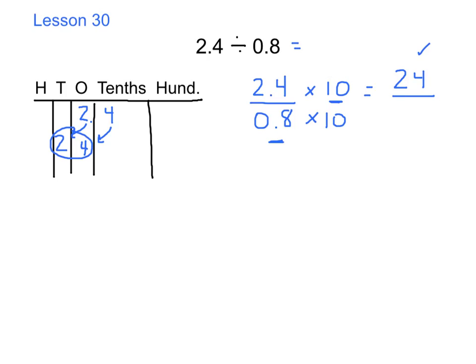Now let's look at the second part: 8 tenths times 10. I know that 8 tenths times 10 is 8. But just to be sure, I'm going to use my place value chart again. I'll put in 8 tenths, and since I'm multiplying by 10, I shift my number one space to the left. We get 8 ones, which matches my denominator of 8 ones.